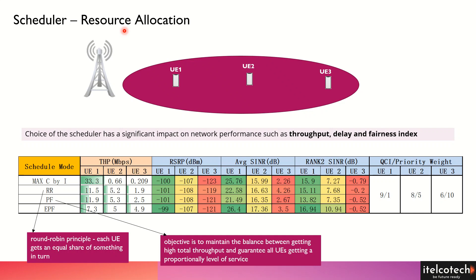Let's understand the resource allocation of the base station across different users through an example. The scheduler in the base station ensures that it provides a fair amount of resources to each user, so they can get the services they are intended to receive.